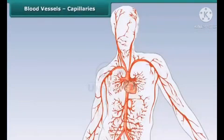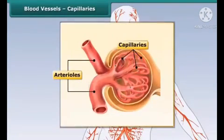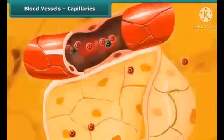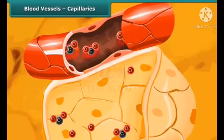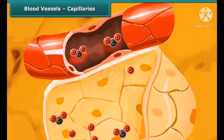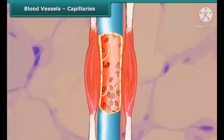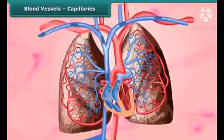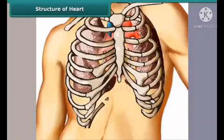Arteries branch into smaller blood vessels called arterioles, which further branch into capillaries. Capillaries are extremely thin blood vessels embedded in the tissues. They carry oxygenated blood from the arteries to the tissues. The oxygen in the RBCs and the waste from the tissues are exchanged through the capillary walls. The capillaries carrying deoxygenated blood join to form venules, which in turn join to form veins, which then carry the deoxygenated blood back to the heart.